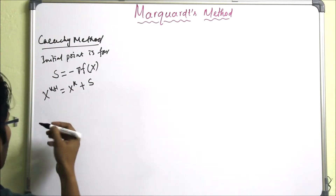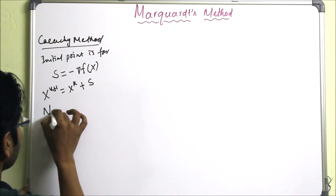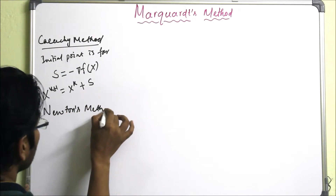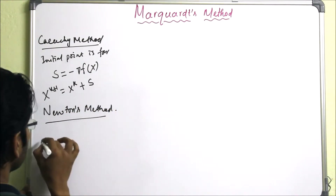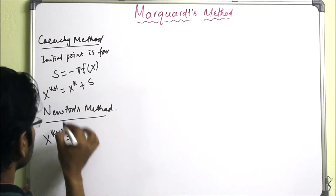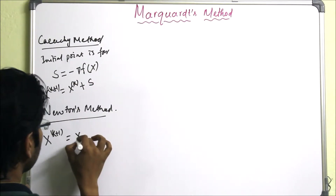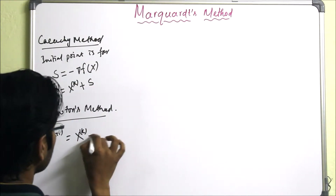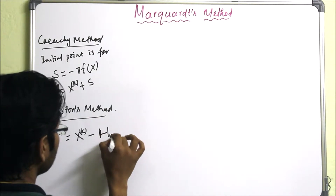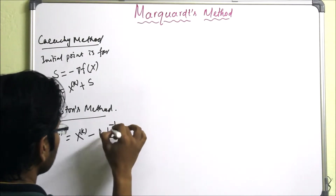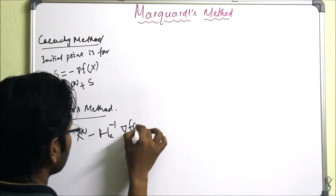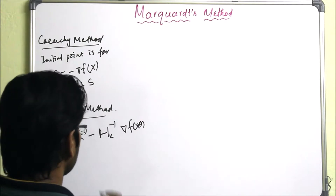If the initial point is close to the minimum point, then Newton's method is useful. Here, we have to find X_{K+1}, which equals X_K minus the inverse of the Hessian matrix H_K, multiplied by the gradient of F(X_K). In this way, we can find the next point.